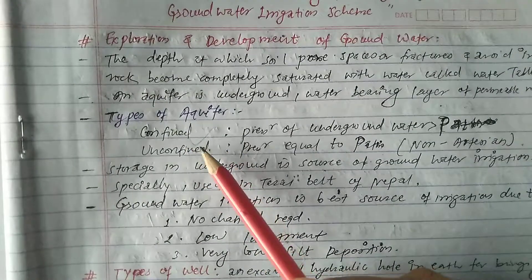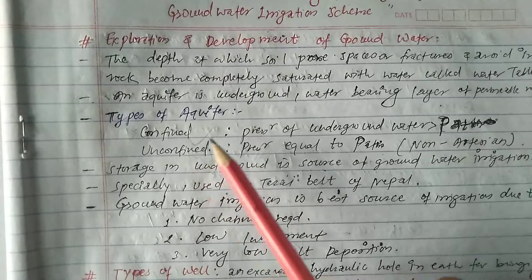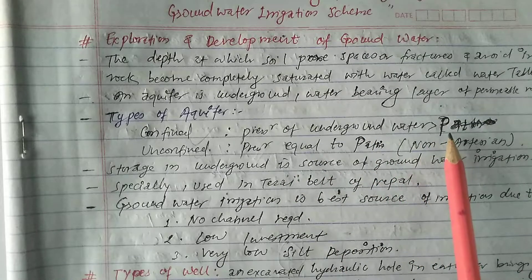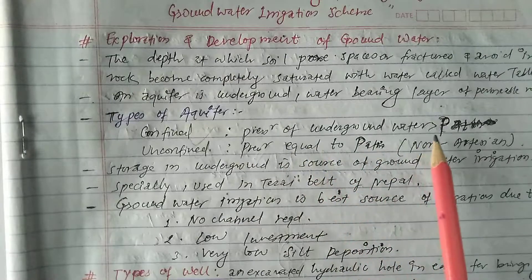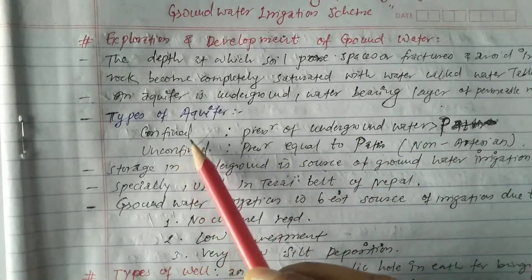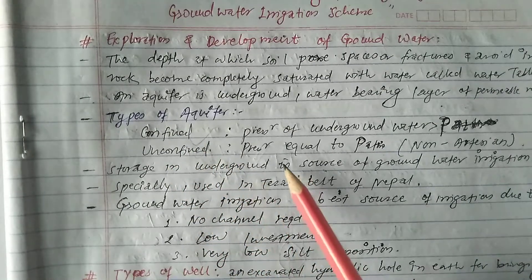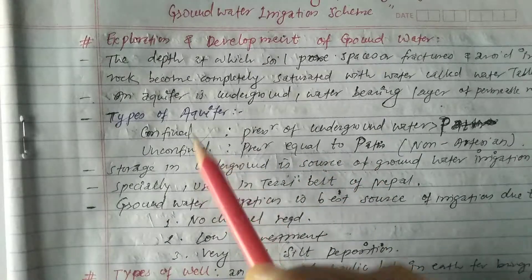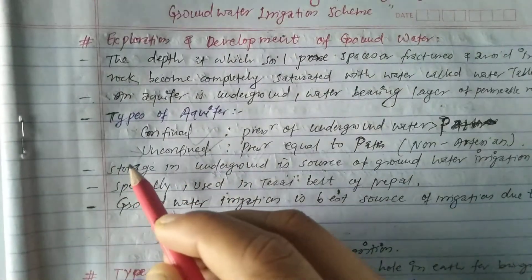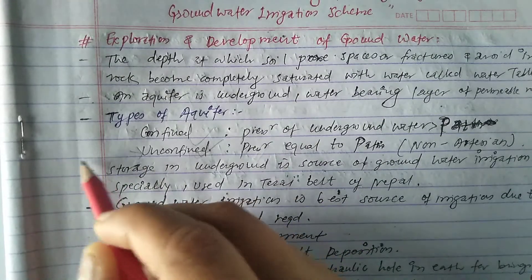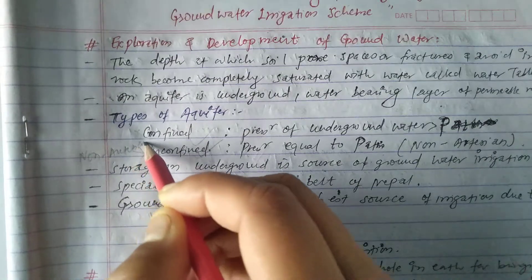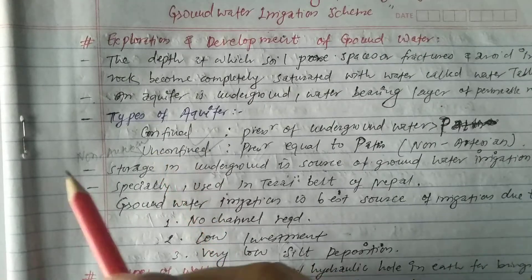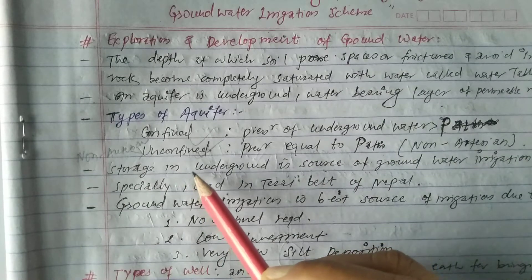There are basically two types of aquifer. The first is a confined aquifer, where the pressure of underground water is greater than atmospheric pressure. The second is an unconfined aquifer, where the pressure is equal to atmospheric pressure. The unconfined aquifer is also called a non-artesian aquifer. You can briefly discuss these two types with the help of a figure.